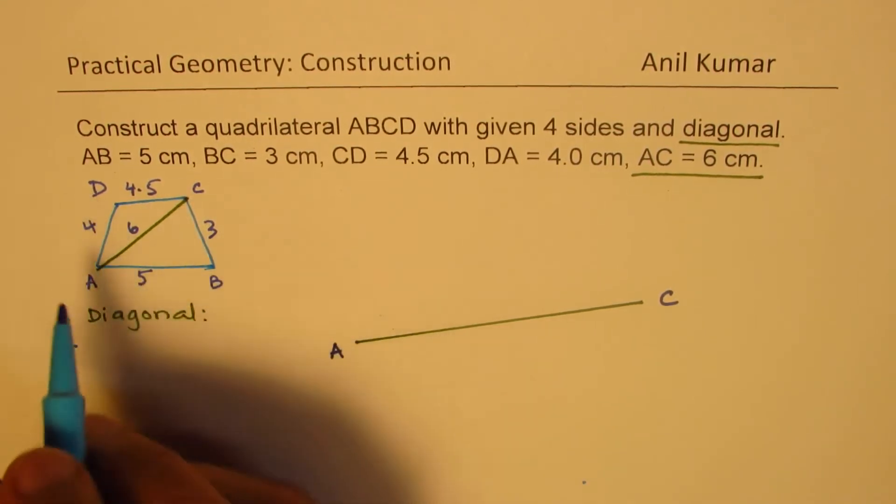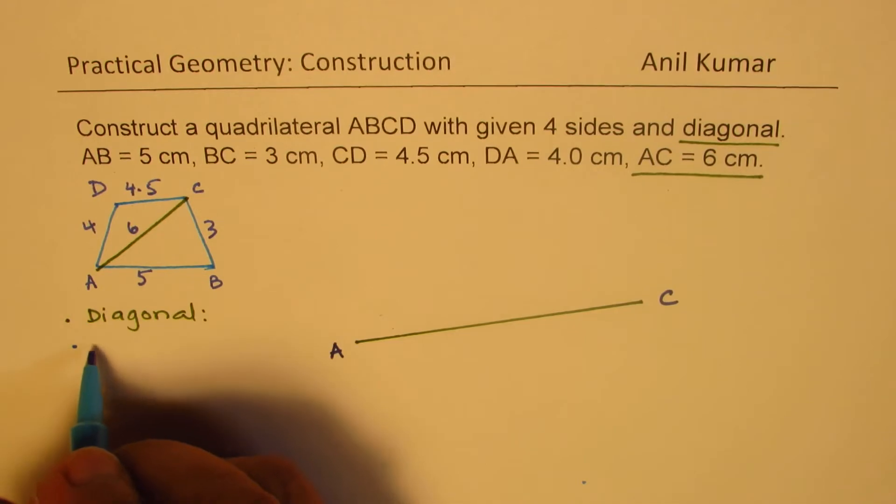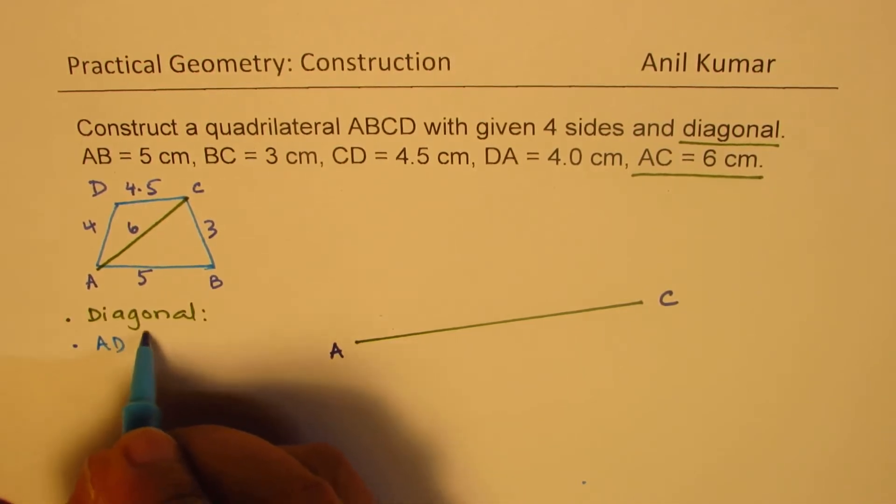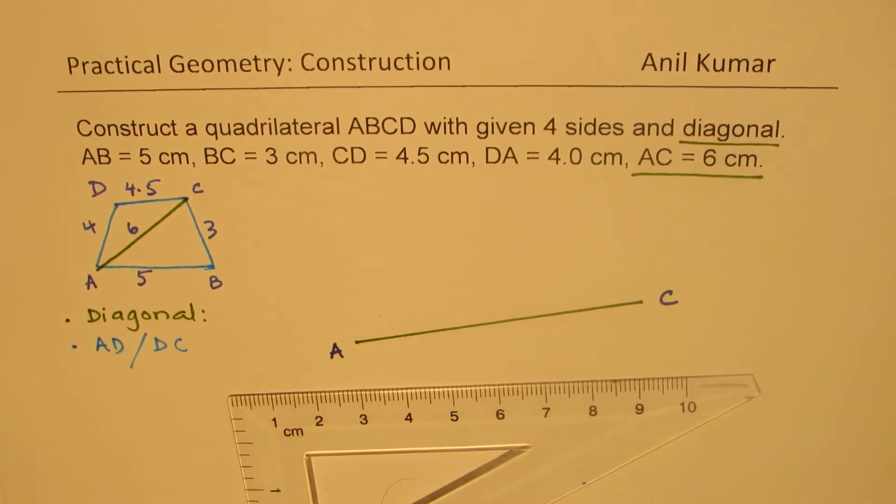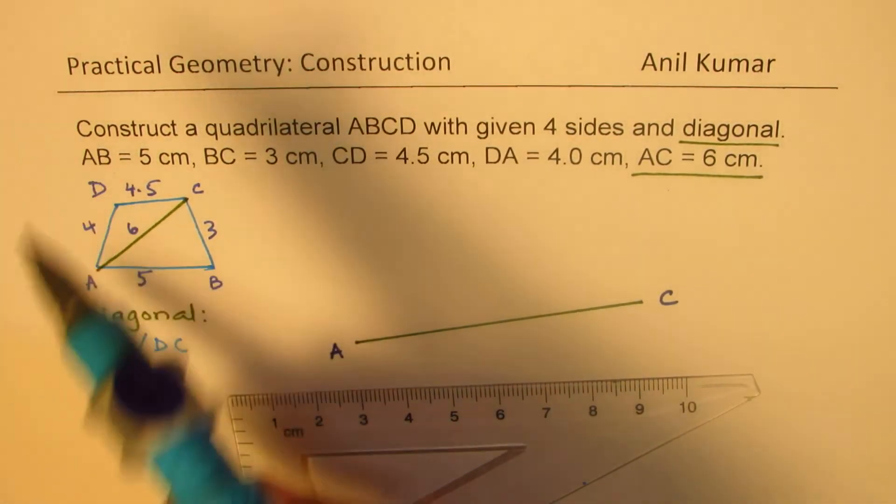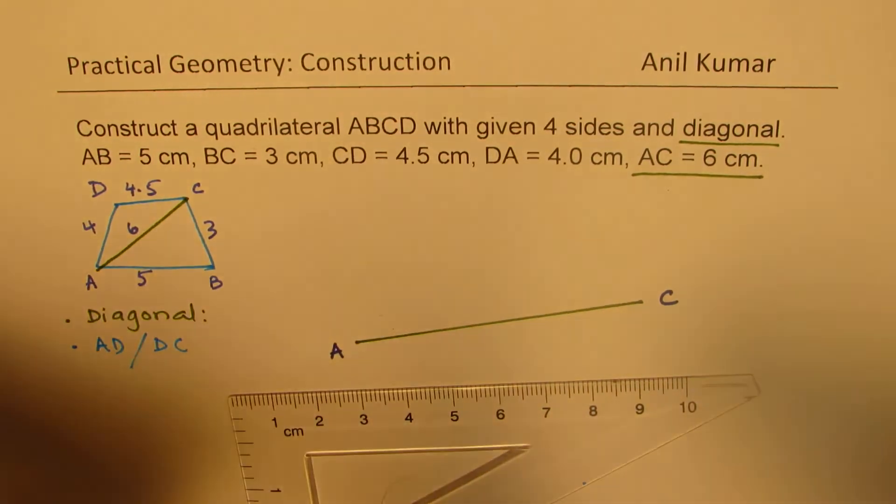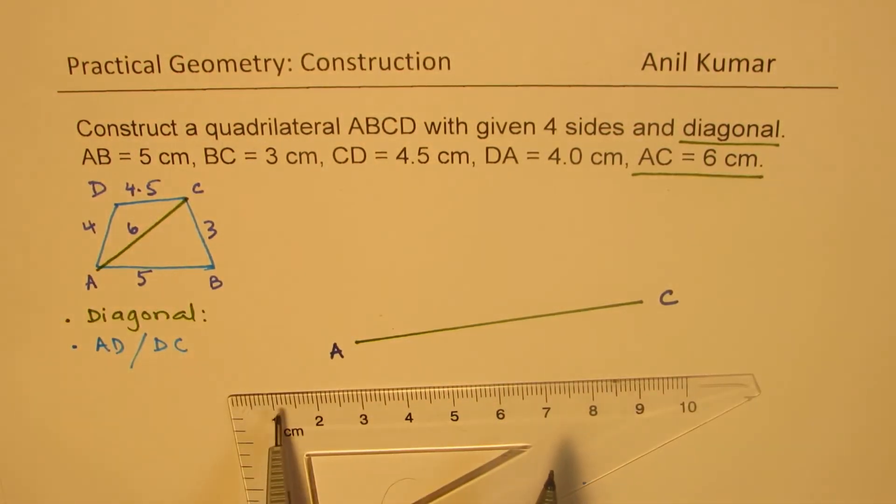So let's make now AD and DC, these two sides. To construct this we'll actually use compass because we need intersection of a point. So again, A to D is given to us as four centimeters, so let's open this to four centimeters.